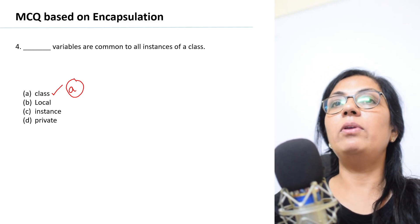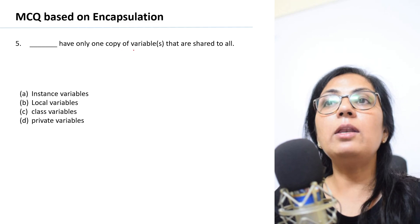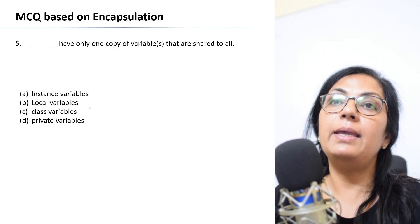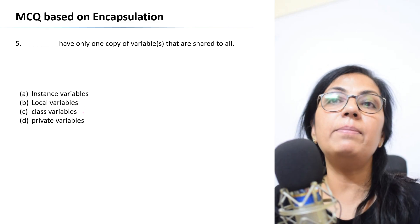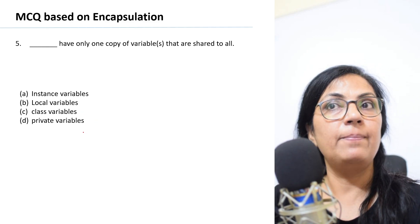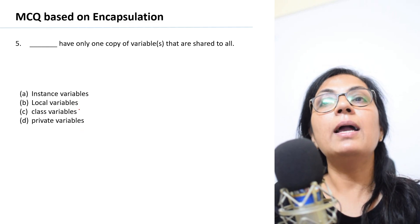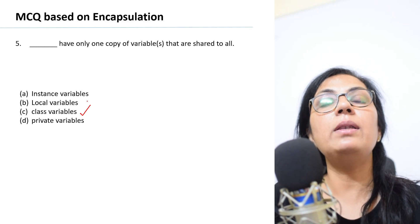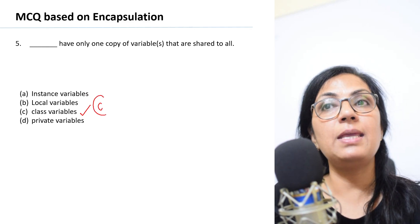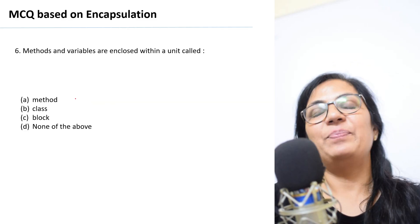Question number five: Blank have only one copy of variables that are shared by all instances — local variables, class variables, or private variables? Class variables have only one copy that is shared by all, so option C is the correct answer.